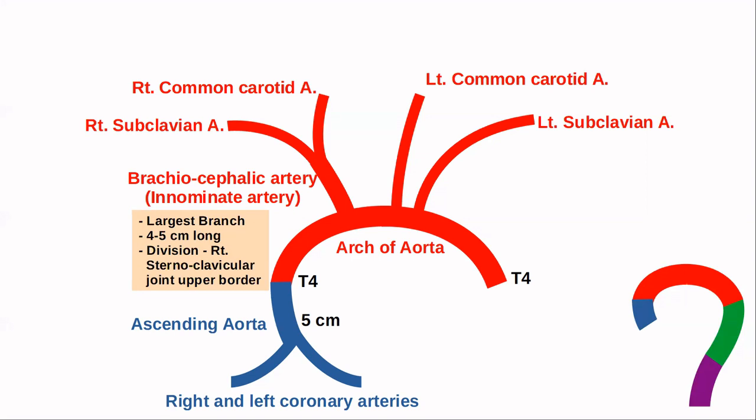An important branch to remember is the vertebral artery, a branch of the subclavian artery — the right vertebral from the right subclavian, and the left vertebral from the left subclavian. In summary: the ascending aorta gives two branches — right and left coronary arteries. The arch of aorta gives three branches — brachiocephalic, and left common carotid and subclavian — with the brachiocephalic giving the right common carotid and subclavian. Both subclavian arteries give rise to the vertebral arteries.